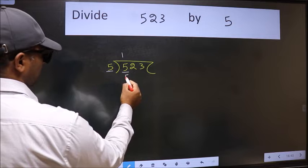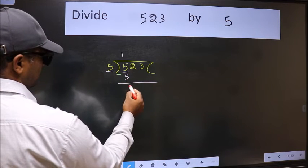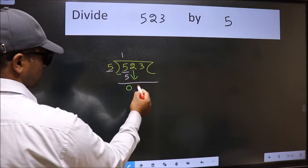5 times 1 is 5. Now we should subtract, we get 0. After this, bring down the beside number, so 2 down.